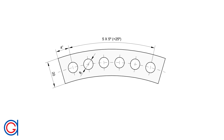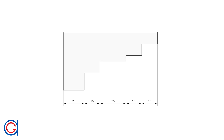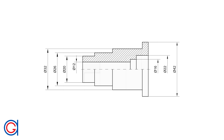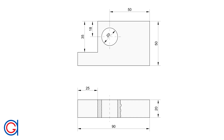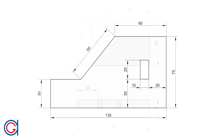Dimensions are a method of communication to fabricators in the production facility. There are different kinds of dimensions such as linear, aligned, angular, radiuses, diameters, etc. The size and position of each feature must be completely defined once and only once. So now we are going to learn the basic fundamental rules for dimensioning a technical drawing.